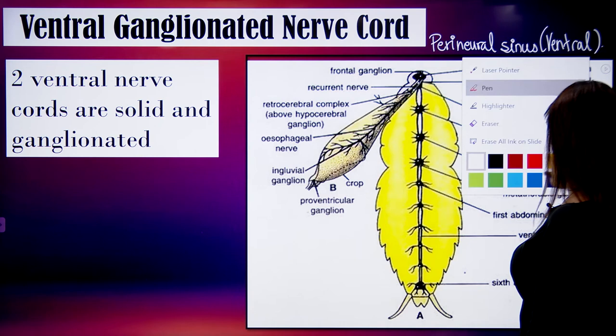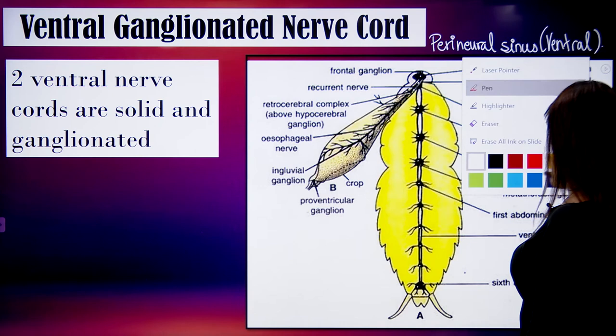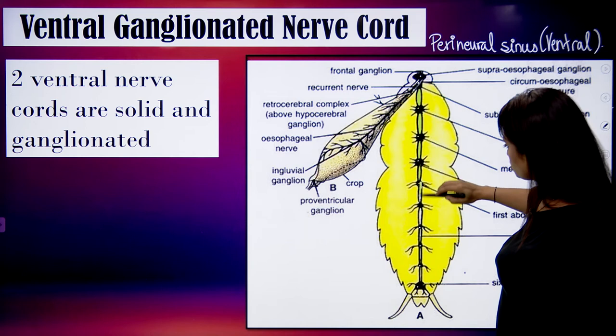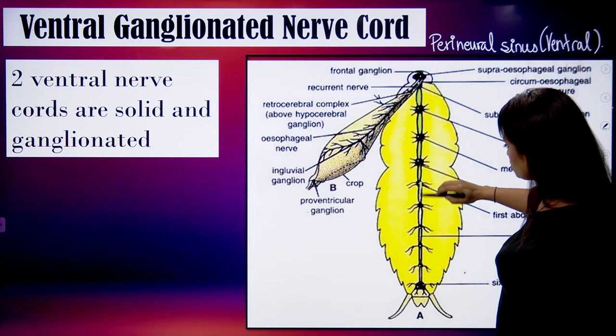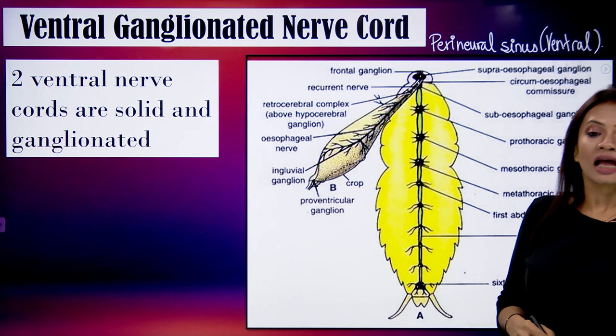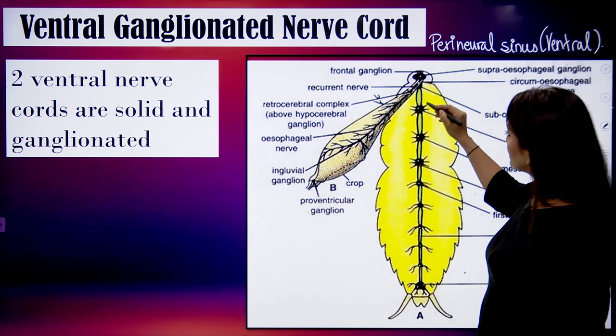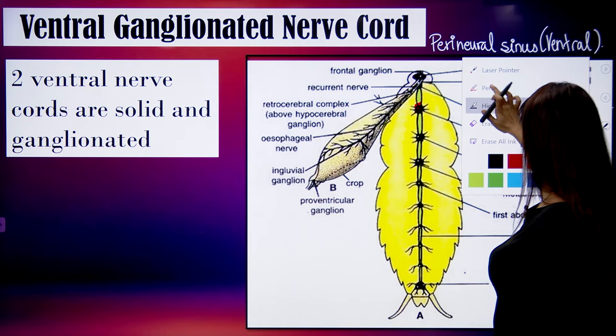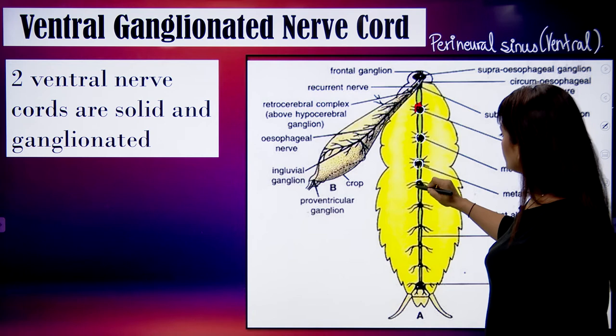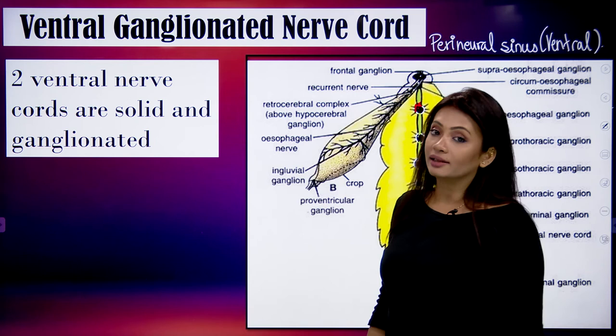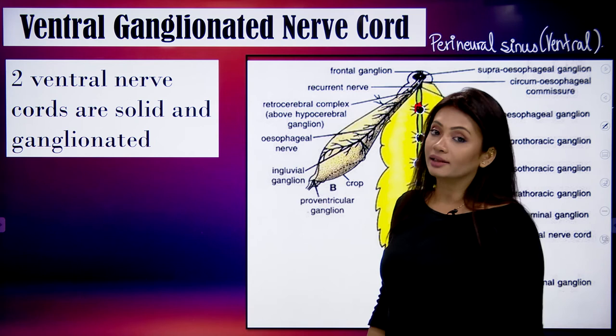There are two ventral nerve cords — you can see the two black lines on both sides. The nerve cord is continuous only that the continuation breaks wherever there is a ganglion. The two ventral nerve cords are solid and ganglionated.